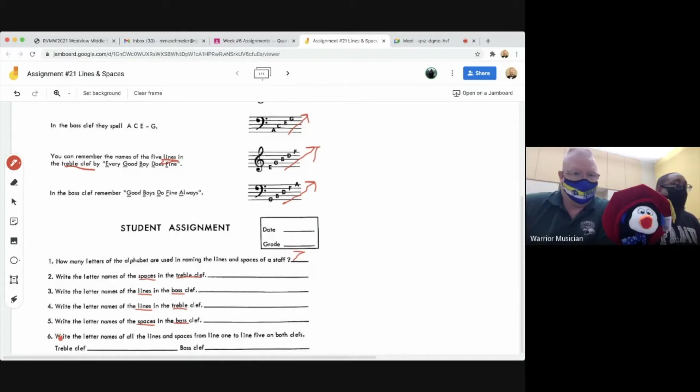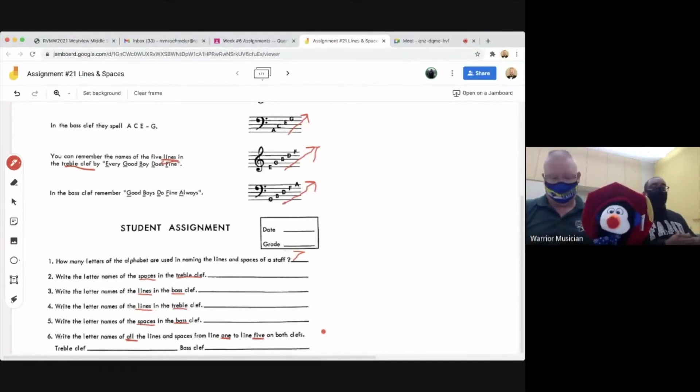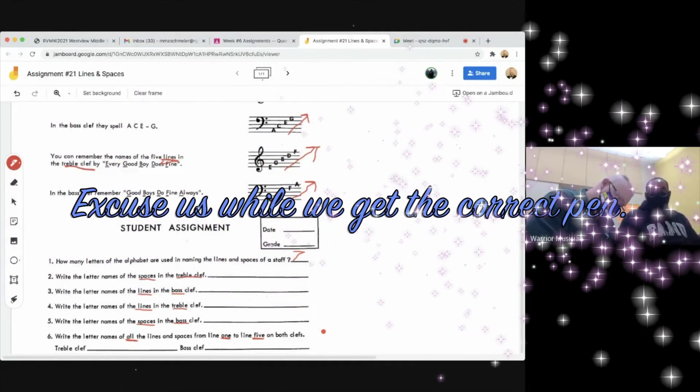Now number six. This is what Mr. Matchmeyer just discussed with you. So it says write the letter names of all the lines and spaces, so all from line one to line five. For both clefs. So what you're going to do, we'll help out. So we're going to start with the treble clef. I'll just hold this up. We might use this one because you can see it better.